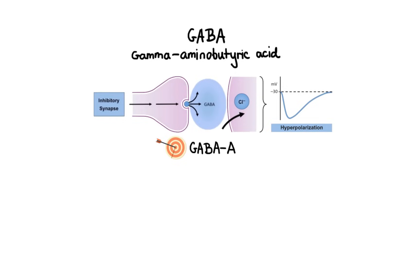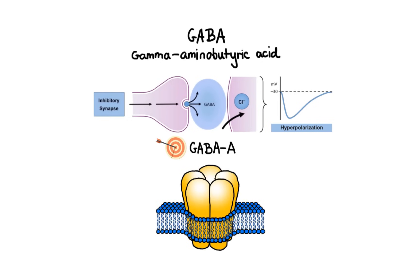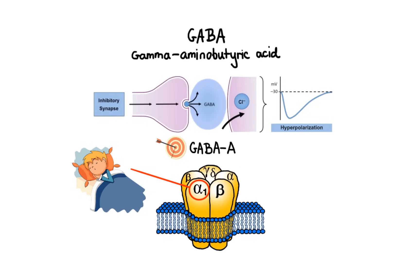The GABA-A receptor is made up of five subunit proteins arranged to form a central pore. These subunits have been labeled with Greek letters such as alpha, beta, gamma and delta. The subunit composition of GABA receptors in the brain most frequently consists of two alpha subunits, two beta subunits and one gamma or delta subunit. Furthermore, for each subunit many other subtypes exist. The function of each GABA receptor depends on which subunit it contains — for example, GABA receptors containing the alpha-1 subunit appear to be involved in sleep, while those that contain alpha-2 or alpha-3 appear to be involved in anxiety.